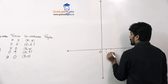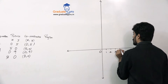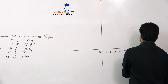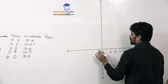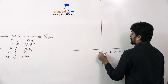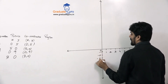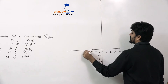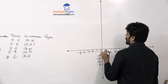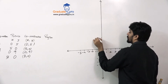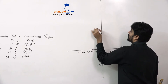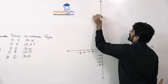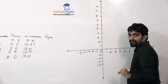We mark the y-axis values as 1, 2, 3, 4, 5, 6, 7, 8, 9. On the negative side: minus 1, minus 2, minus 3, minus 4, minus 5. And on the x-axis: 1, 2, 3, 4, 5, 6, 7, 8, 9, 10.